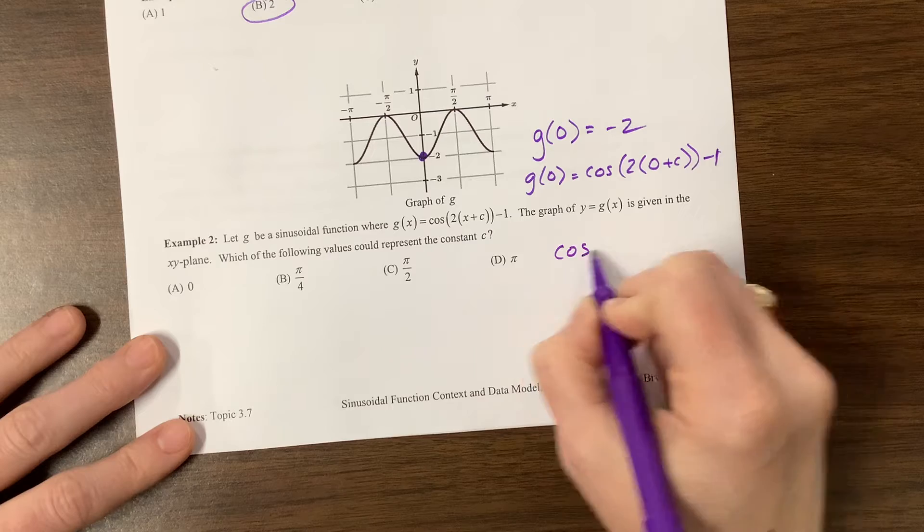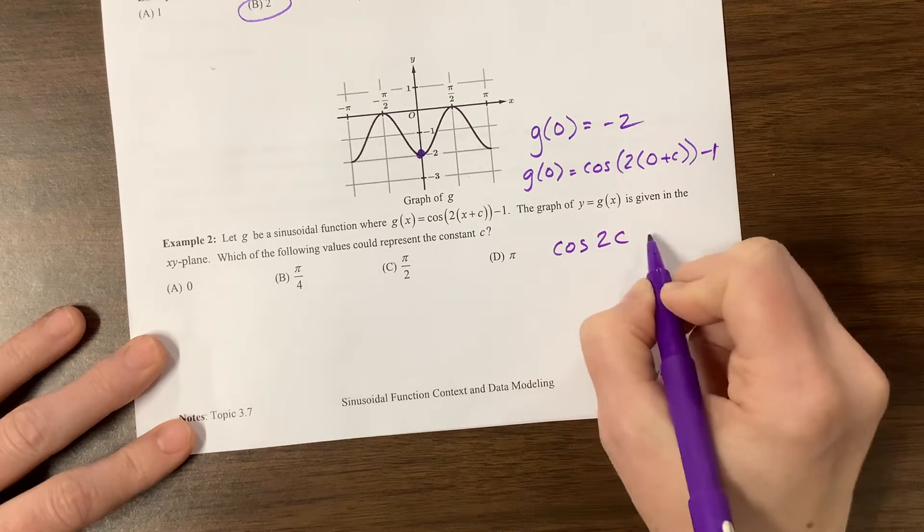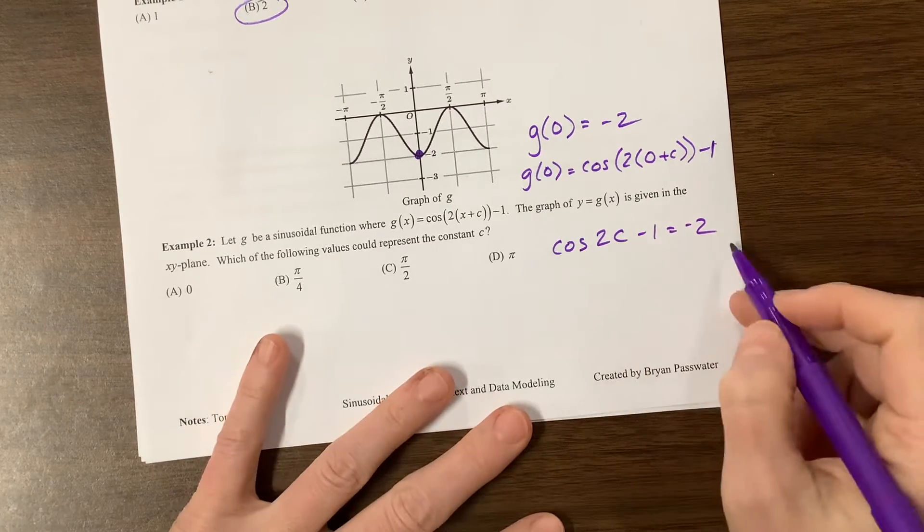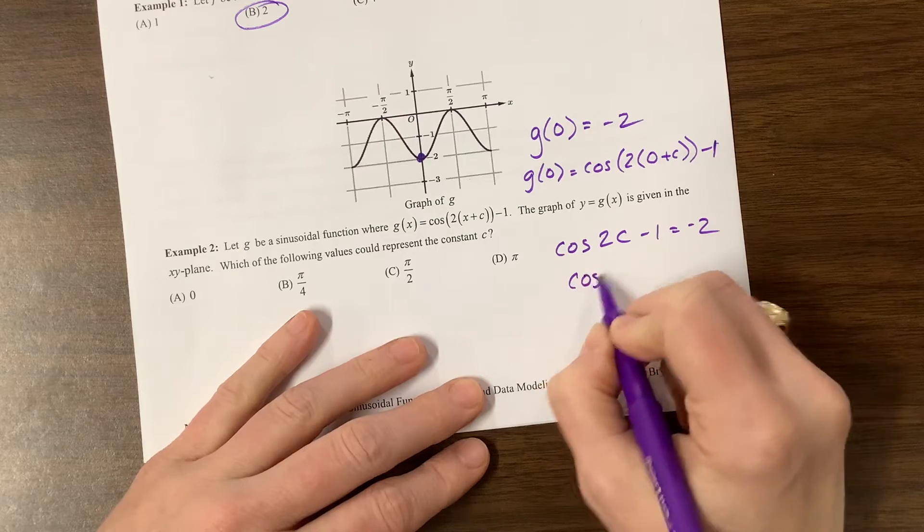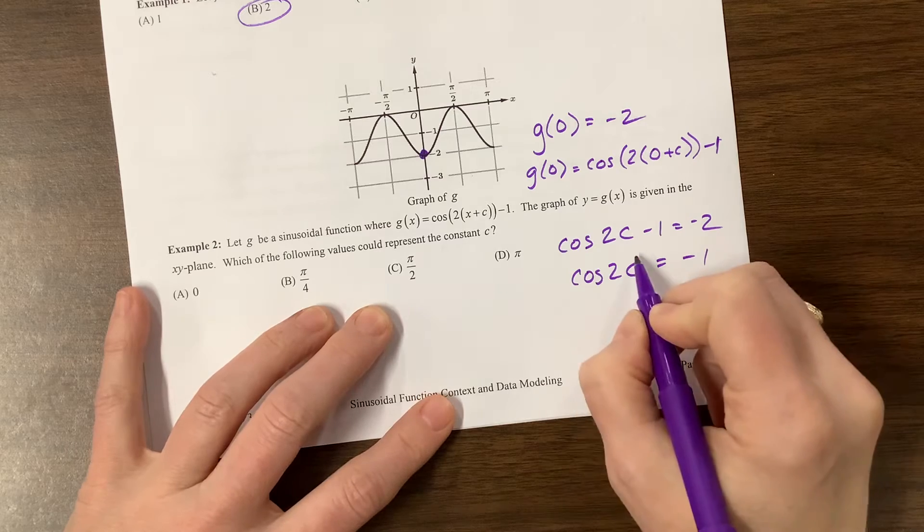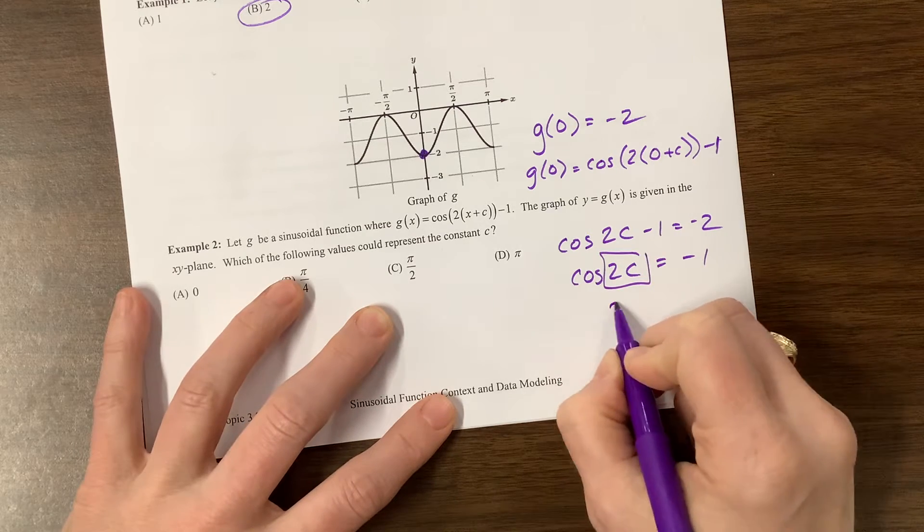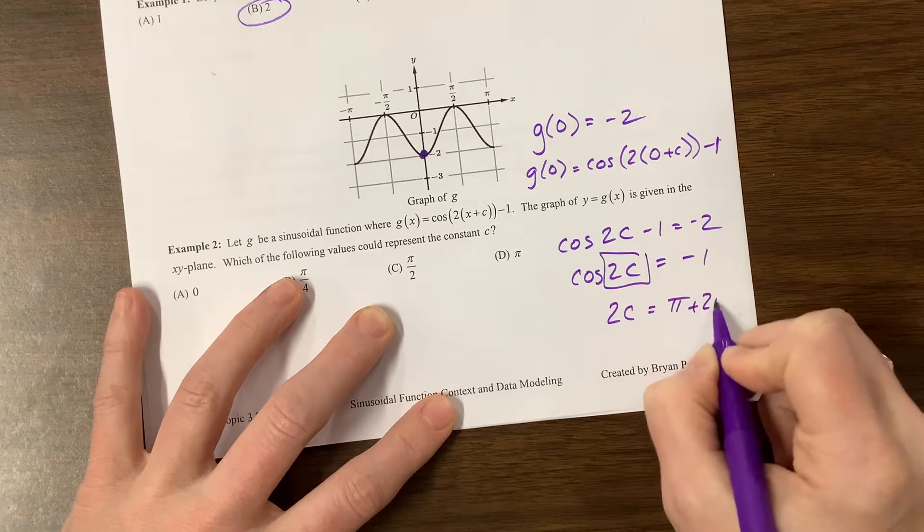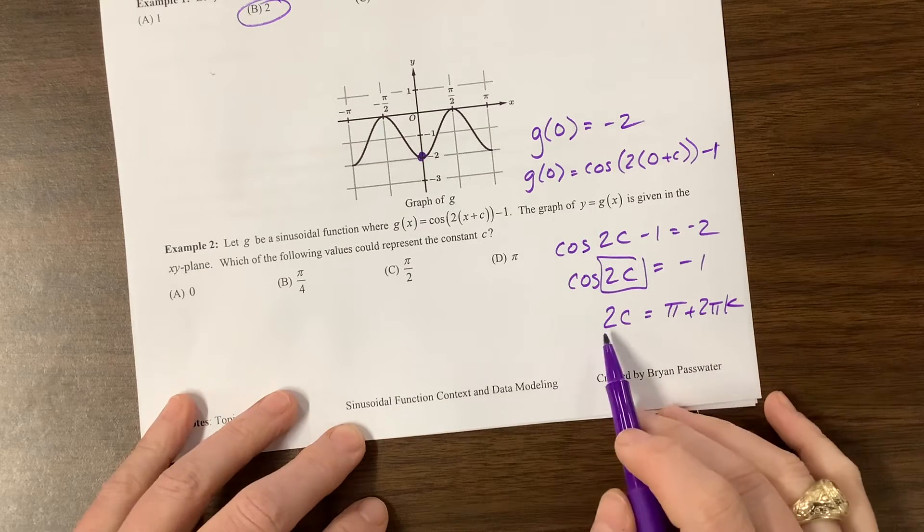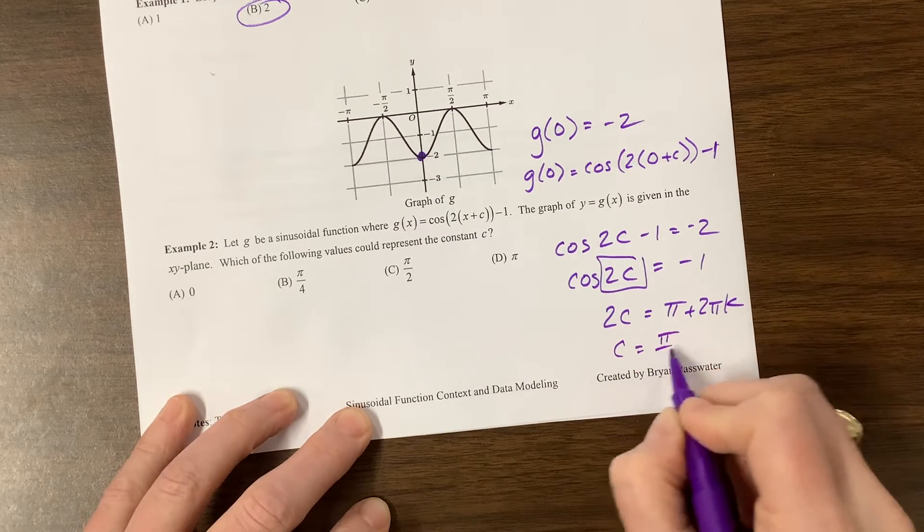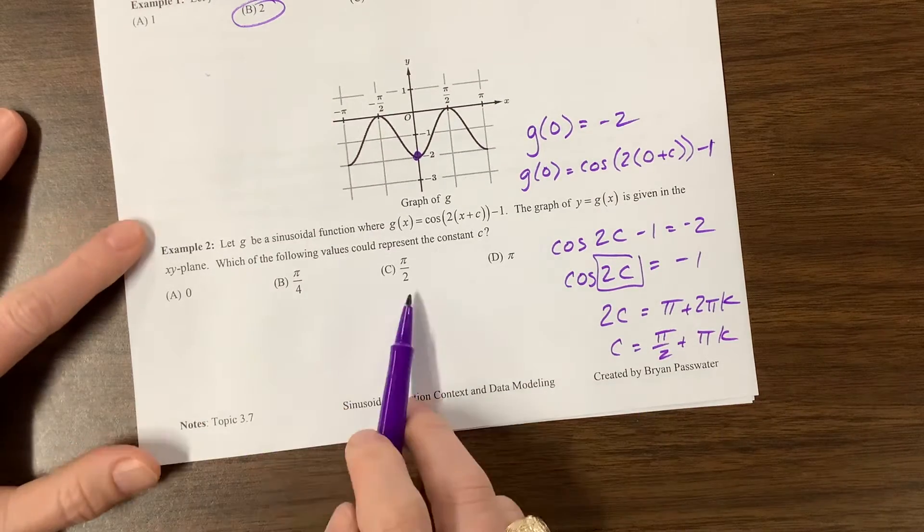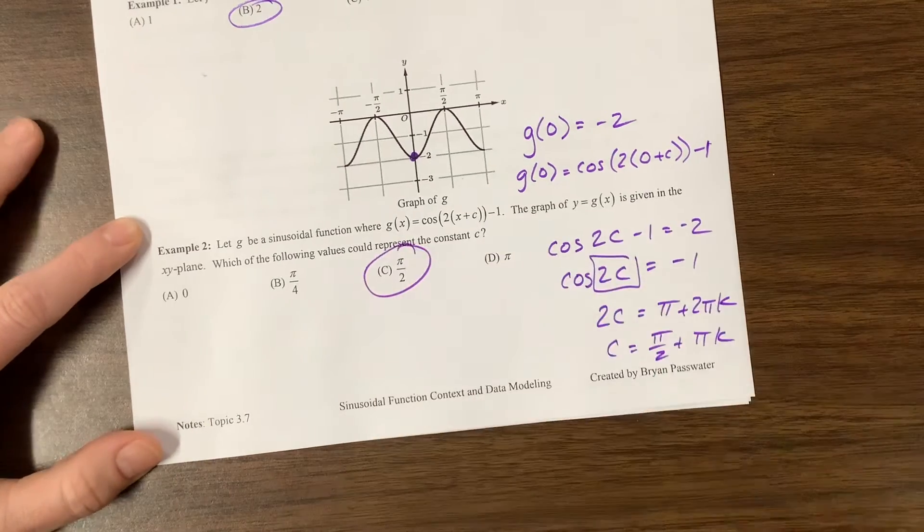If I come along and say, this means G of 0 equals cosine of 2 times 0 plus C minus 1, that's going to equal negative 2. Let's clean this up. This is cosine of 2C minus 1 equals negative 2. I add 1 to both sides, and I get cosine of 2C equals negative 1. Cosine equals negative 1 at pi.